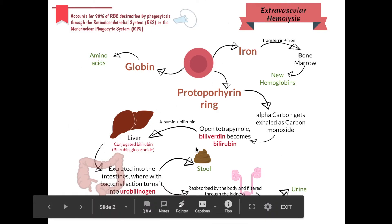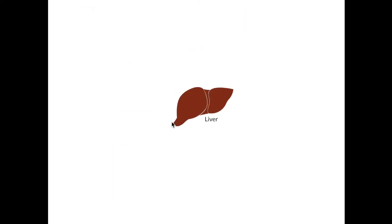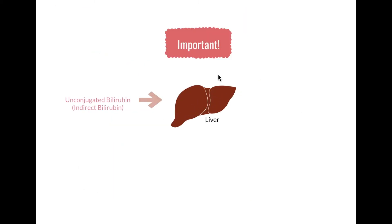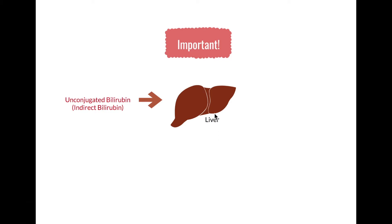Let's focus on an important concept. Once bilirubin gets picked up by albumin and goes to the liver, before it reaches the liver it's called unconjugated bilirubin — another term for that is indirect bilirubin. When it gets to the liver and gets processed, it becomes conjugated bilirubin, or in other words, direct bilirubin.